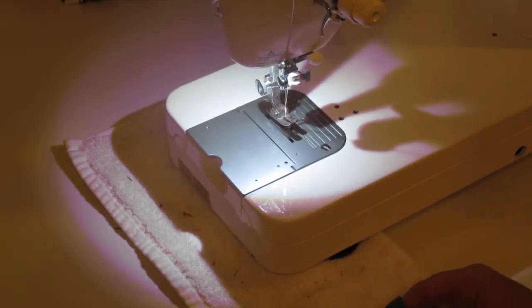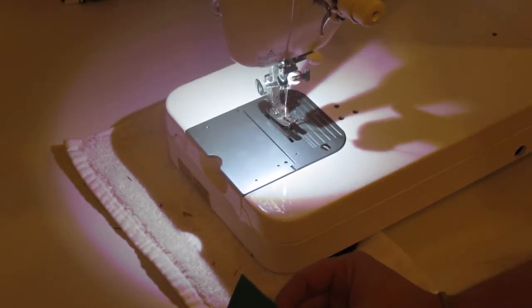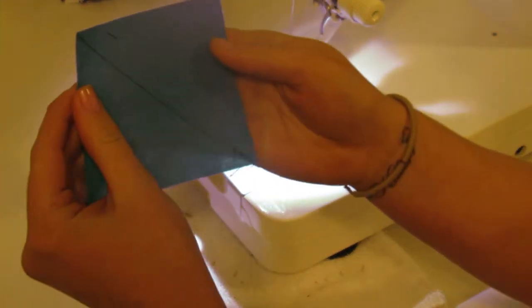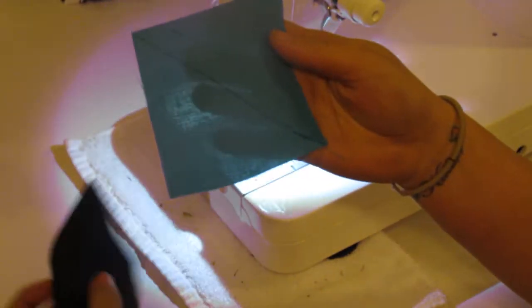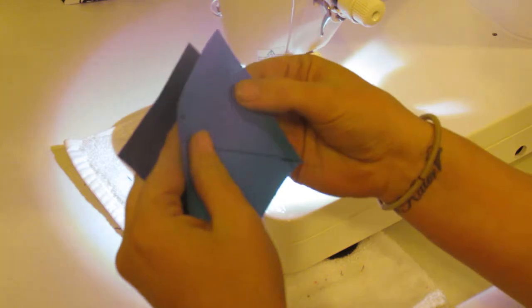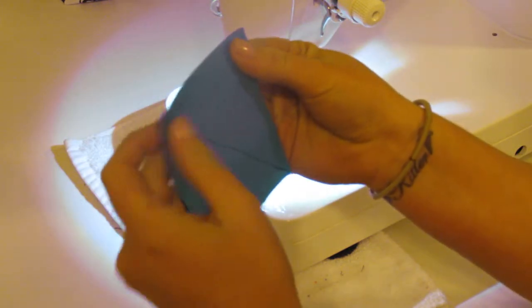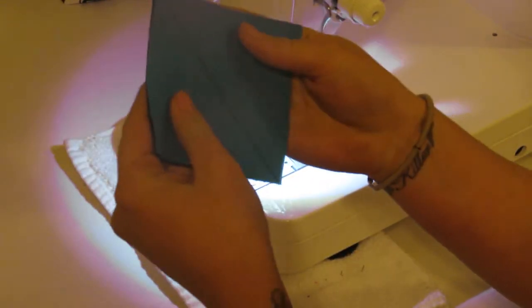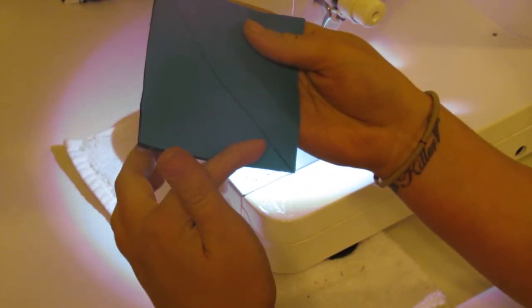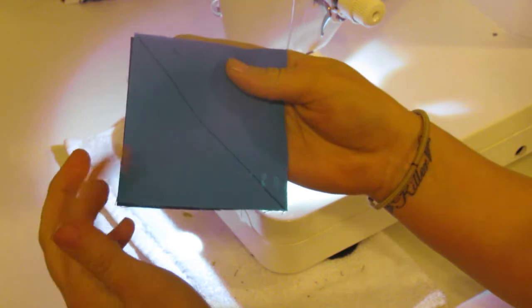The first thing that you're going to need to make this block is you are going to take your lighter color and mark a line from corner to corner, then place it on top of your darker color. These are the three and three quarter inch squares. Then you're going to sew a quarter of an inch on each side of that line.